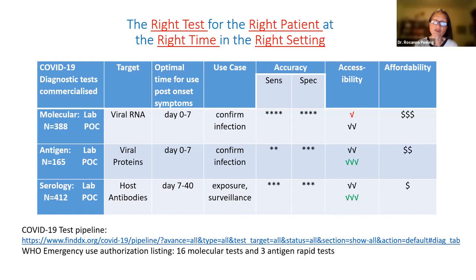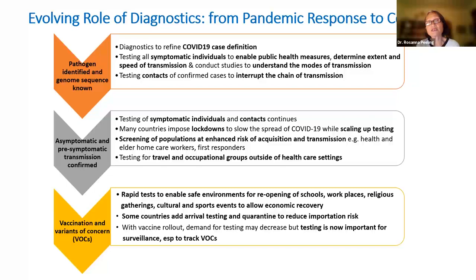Many of these tests are not good quality, so it's really important to have evaluation data on their accuracy. WHO has only given emergency use authorization to 16 molecular tests and three antigen rapid tests.